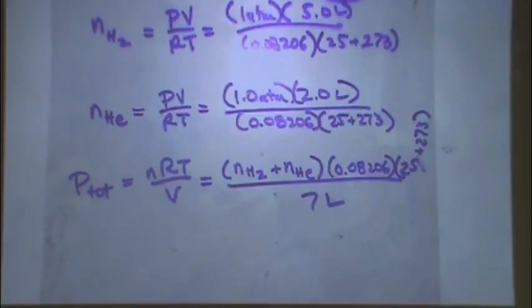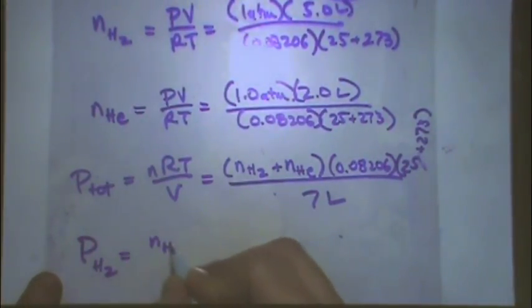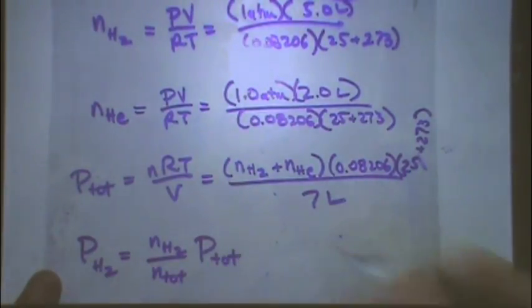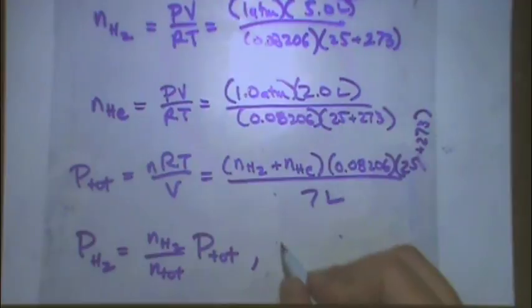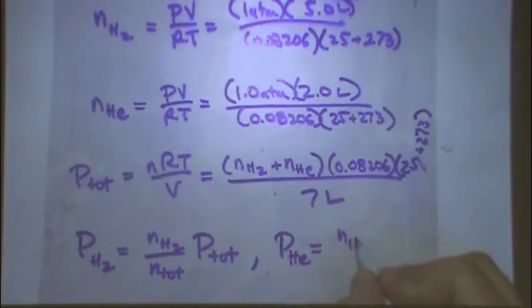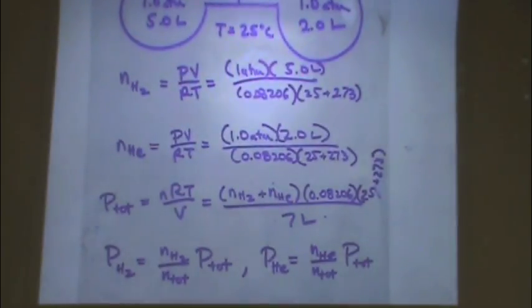Personally, I would go last to the partial pressures. So, the partial pressure of hydrogen would be the moles of hydrogen divided by the total moles times the total pressure. Total pressure was just found right above. Similarly, the partial pressure of helium, moles of helium over N total times P total. I just made it up, so I don't have any numbers for you. But this would be a common way that I would solve this kind of question.